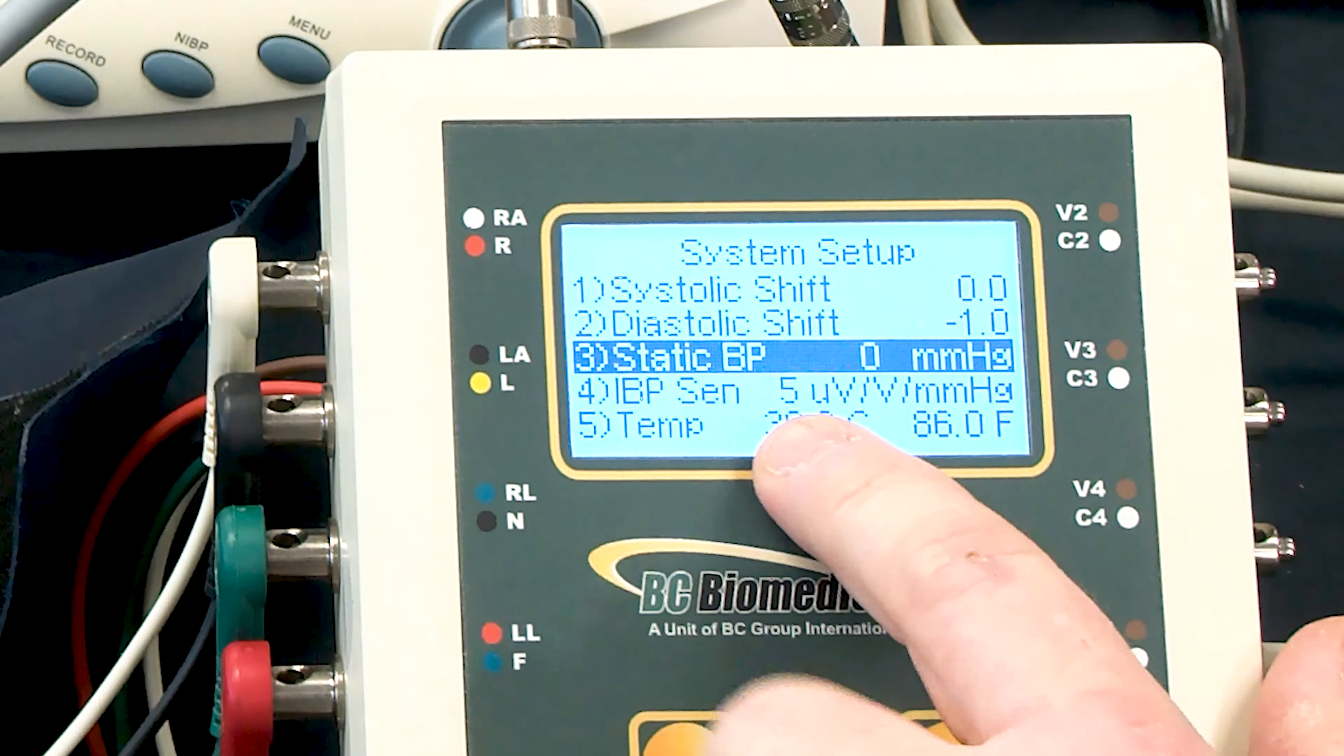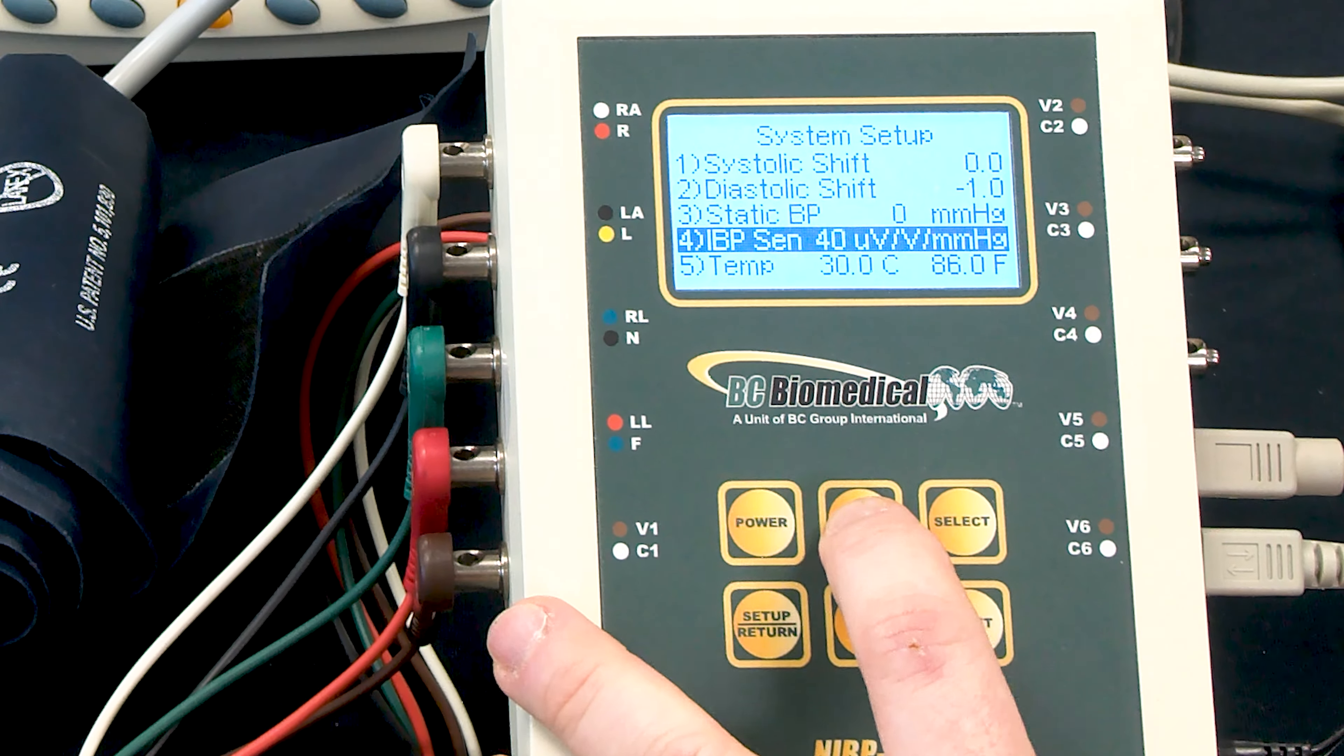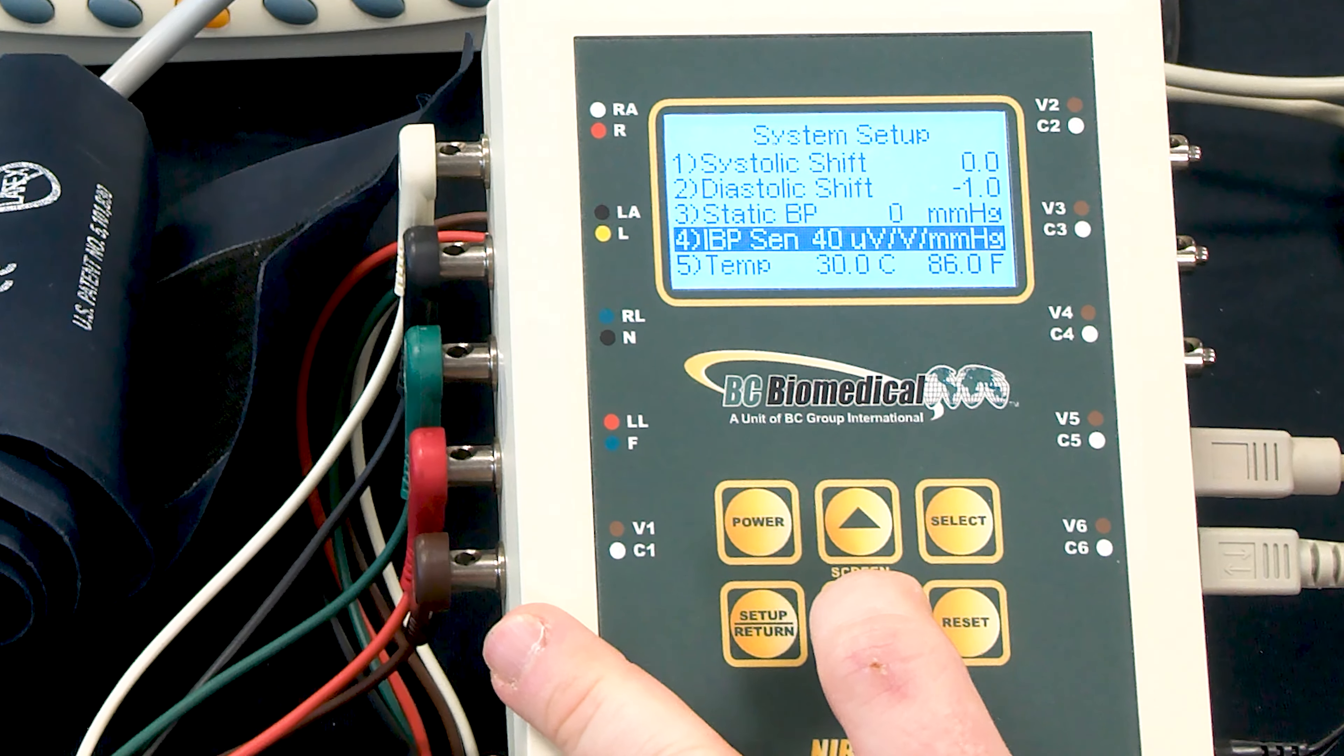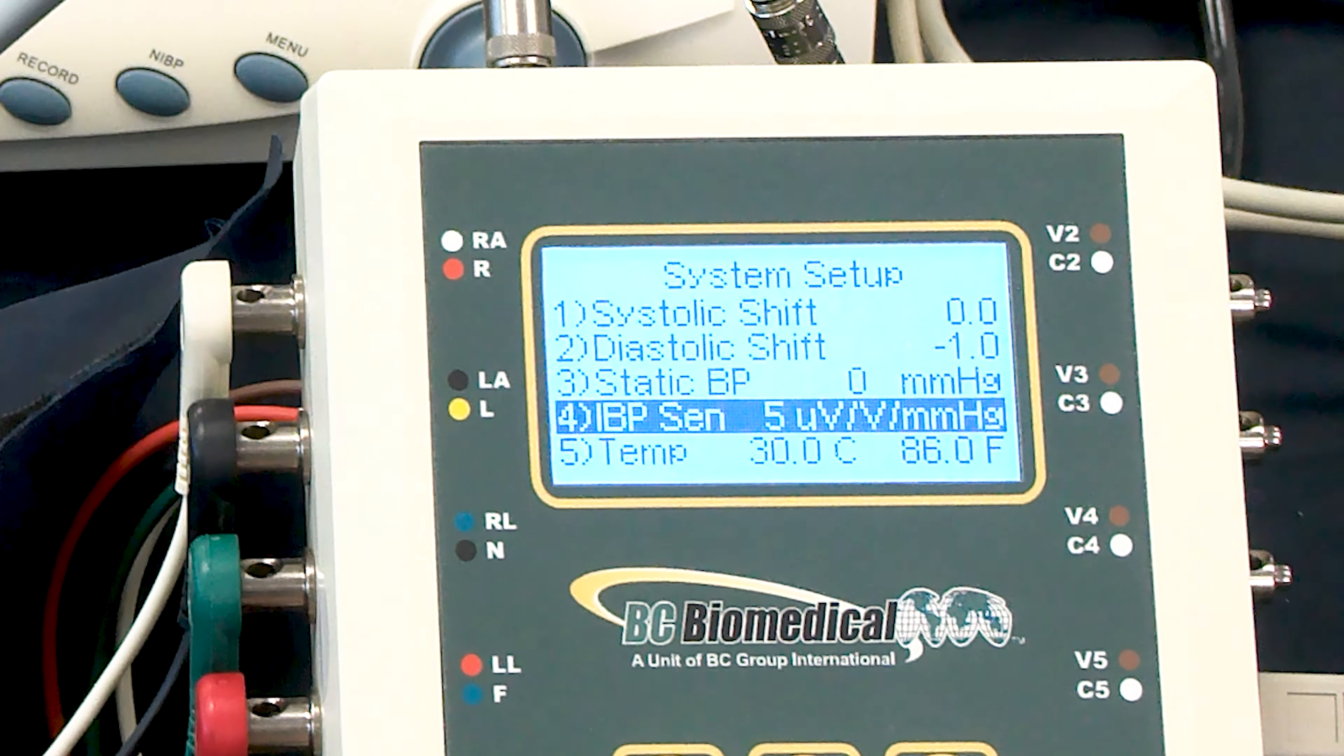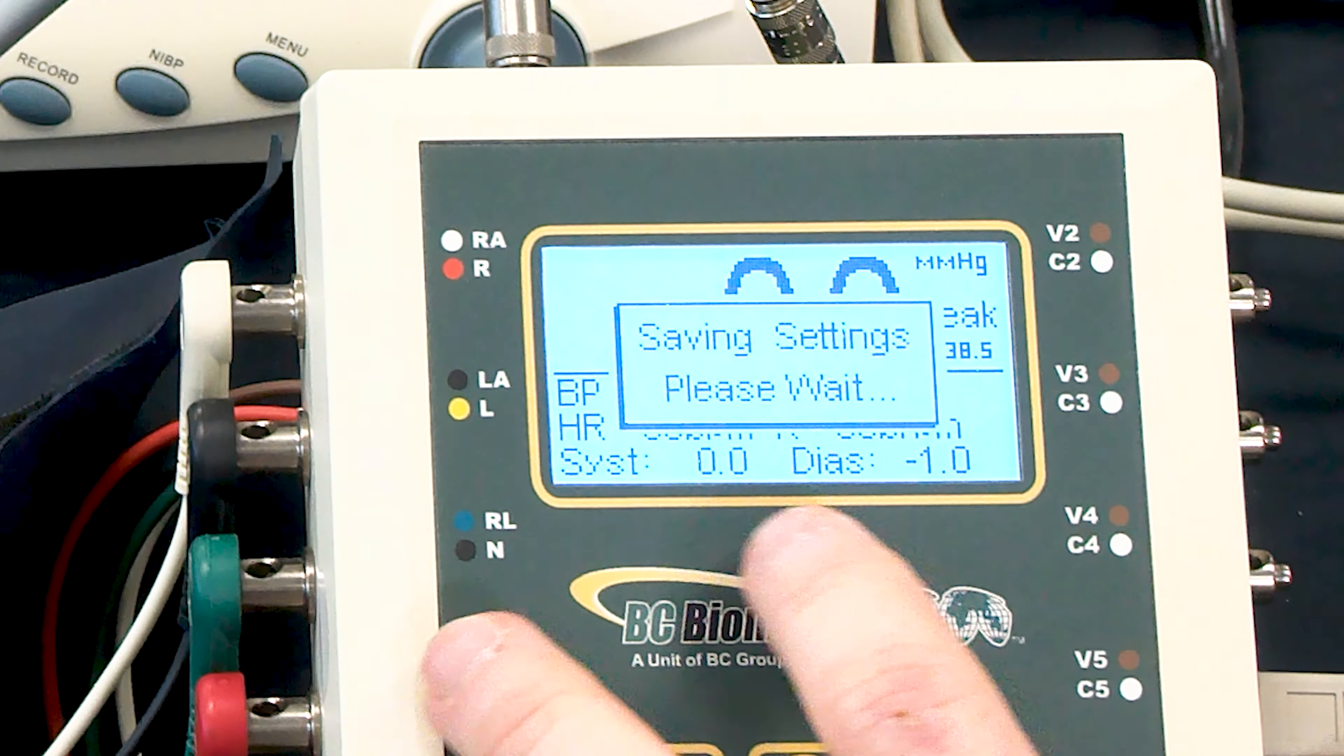The other thing that's important is the sensitivity. The NIBP has options for either 5 or 40 microvolts per volt per millimeter of mercury, and if that's not configured right, we won't get proper simulation on the monitor. So we have to make sure that that is configured correctly for our monitor, and when we go back out to the main screen,